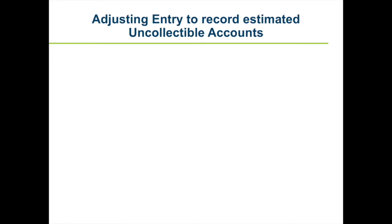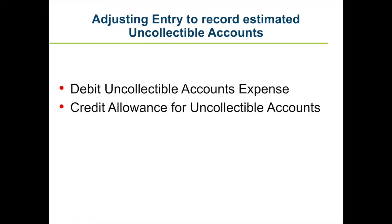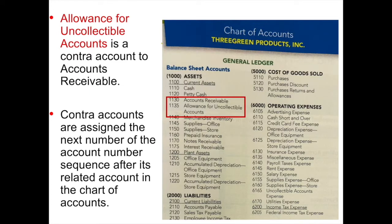The adjusting entry to record estimated uncollectible accounts affects two general ledger accounts. The amount is debited to uncollectible account expense and credited to an account titled allowance for uncollectible accounts, which is a new account. Allowance for uncollectible accounts is a contra asset to its related account, accounts receivable.